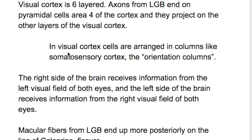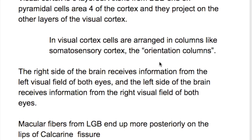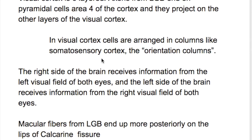How are the cells arranged in the visual cortex? Like the somatosensory cortex, the cells in the visual cortex are arranged in orientation columns, which give the exact location of the object.